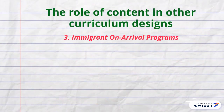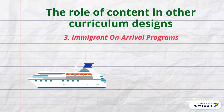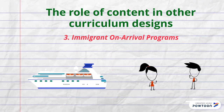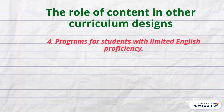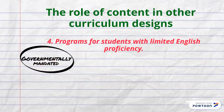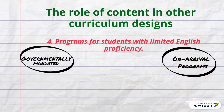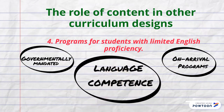Immigrant on arrival programs typically focus on the language newly arrived immigrants need for survival, with real-world content considered the basis for social survival. Programs for students with limited English proficiency are governmentally mandated programs designed to provide in-class or pull-out instruction for school-aged children whose language competence is insufficient to participate fully in normal school instruction.